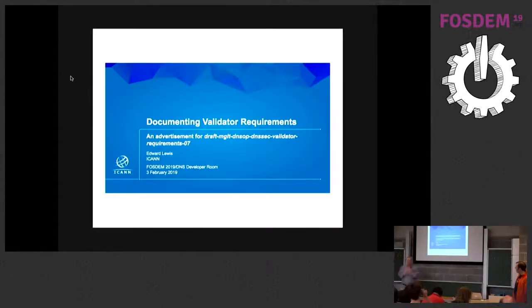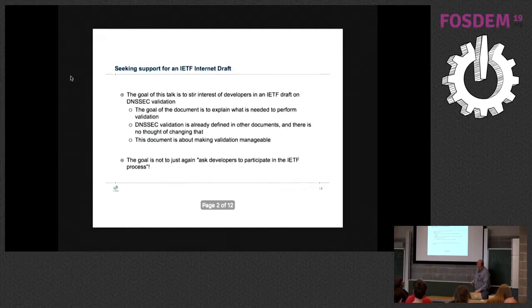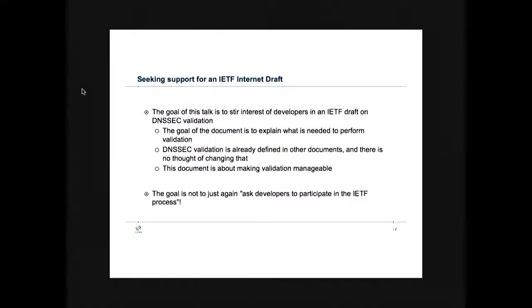Okay, so this is an advertisement for a document that I'm partly working on, and this is a document that's trying to document what is required to have a validator do its job. Not to document what validators do, because that's all over the place. One of the reasons why I'm bringing this up is that the authors, we've been working on this document slowly, but we amongst ourselves don't have total agreement with what needs to be in the document, and so we're trying to get input from those the document will impact, which are the operators and the implementers. So that's the main reason why I'm bringing this up here.